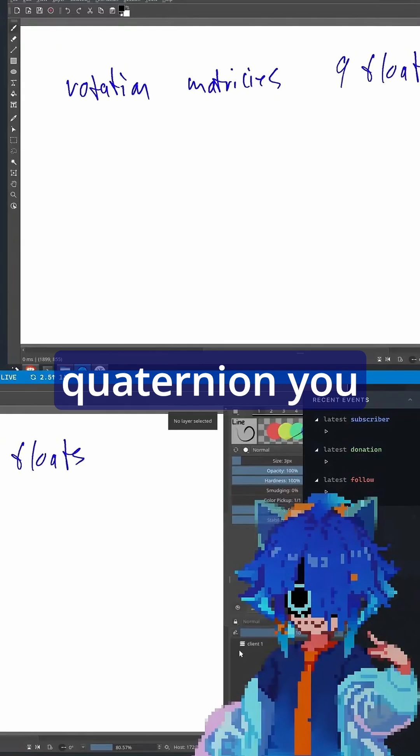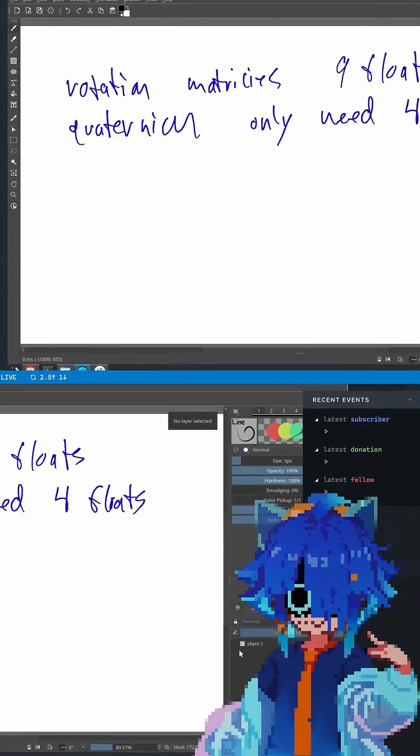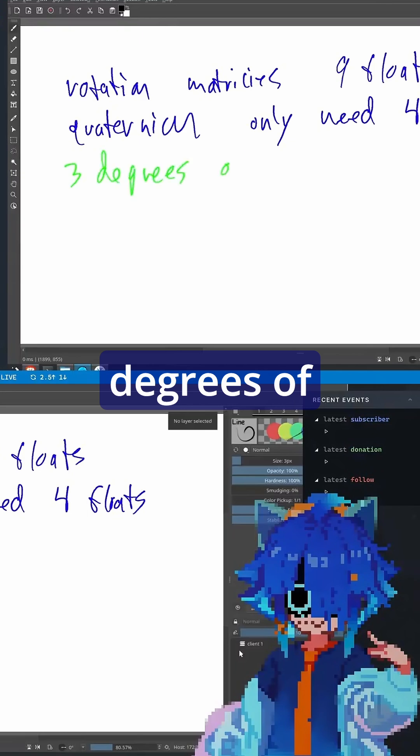Whereas with a quaternion, you only need four floats and this is encoding three degrees of rotational freedom.